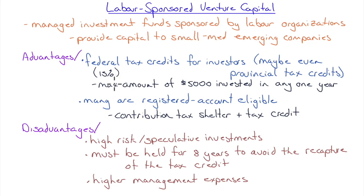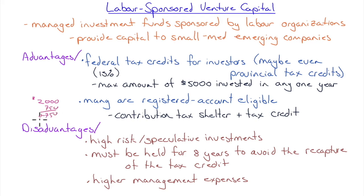There's a catch: these are very illiquid — there's an eight-year holding period to avoid repaying the tax credit. Many are registered account eligible, which is where the power lies. If you're in a 40% tax bracket and put $5,000 into a labor-sponsored VC fund inside your RSP, you get a 40% tax savings of $2,000 deferred, plus the $750 tax credit — a total tax reduction of $2,750 this year. You're really out of pocket only $2,250 for $5,000 worth of fund value.